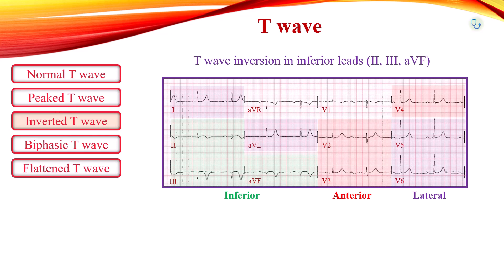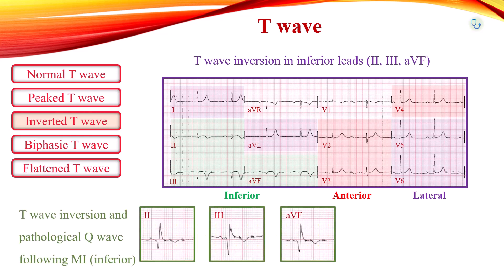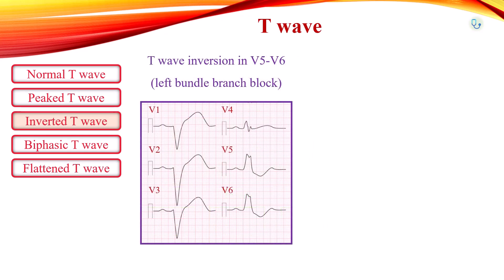Dynamic T-wave inversions are seen with acute myocardial ischemia, while fixed T-wave inversions in association with pathological Q-waves are observed following myocardial infarction. In discordant pattern left bundle branch block, T-wave inversion and ST-segment depression can be observed in leads with dominant R-waves: V5, V6, lead 1, and AVL.